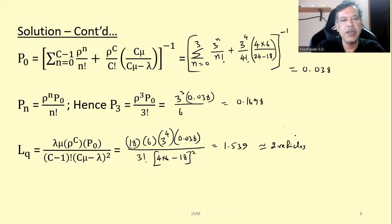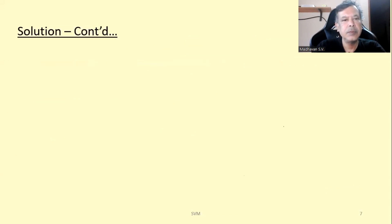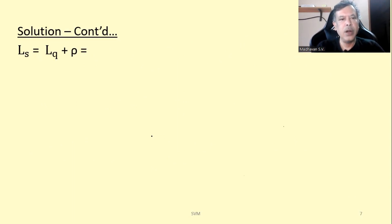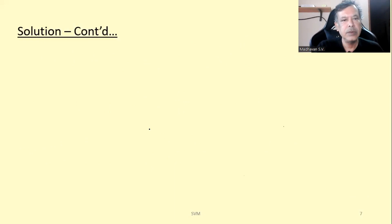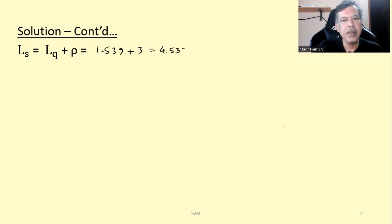L_s, the average number of customers in the system, equals L_q plus rho. We will use the value before rounding off, which was 1.539, plus rho equals 3, giving us L_s equals 4.539. This again can be rounded to 5 vehicles.